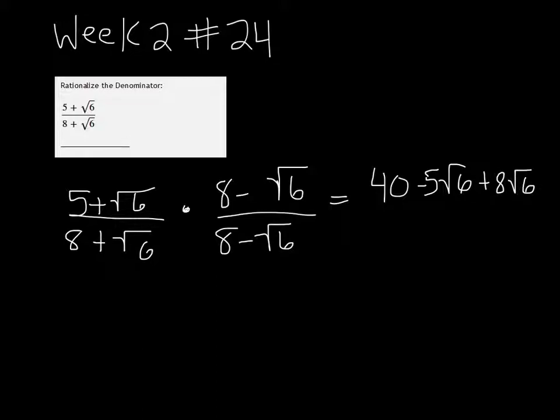And then root 6 times root 6 is just 6, and it's going to be a minus 6 because there's 1 minus and 1 positive. The reason is because it would be the square root of 36, which is just 6.